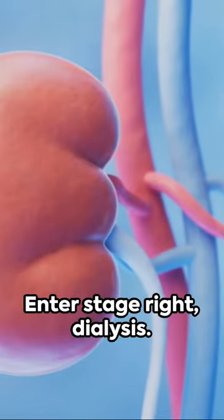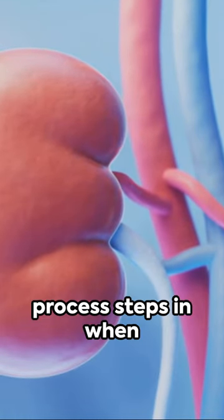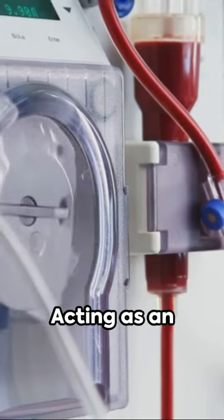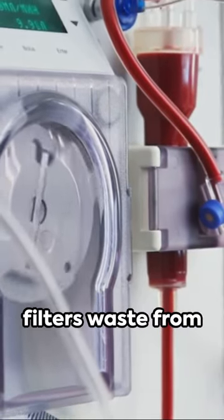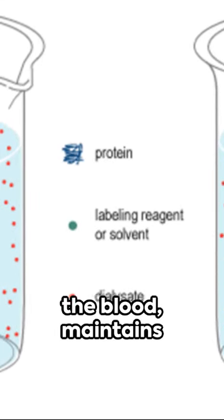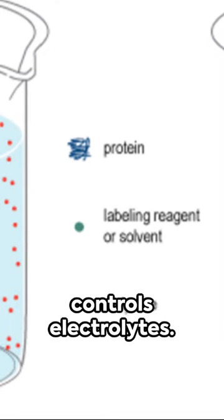Enter stage right dialysis. This life-saving process steps in when kidneys falter. Acting as an artificial kidney, it filters waste from the blood, maintains fluid balance, and controls electrolytes.